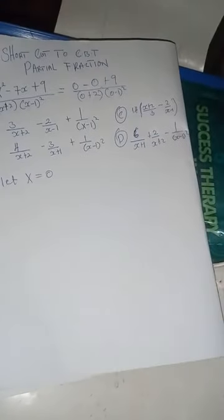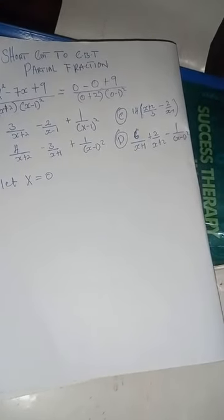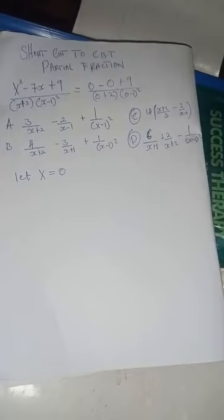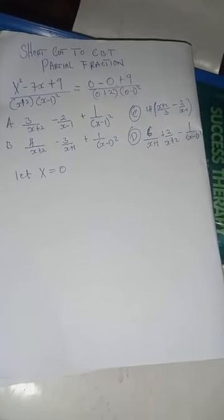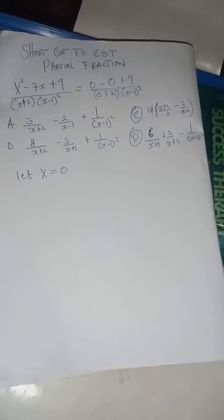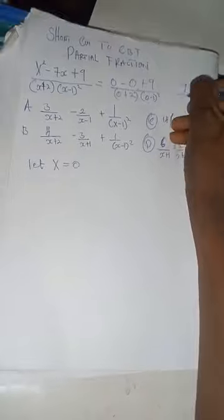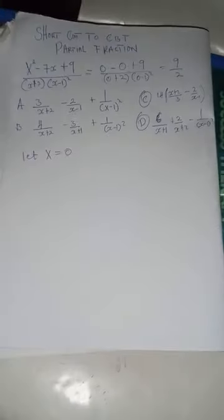In the numerator we have nine, and in the denominator we have negative one squared which gives us positive one, multiply by two, we have two. So we have nine over two as our given answer.